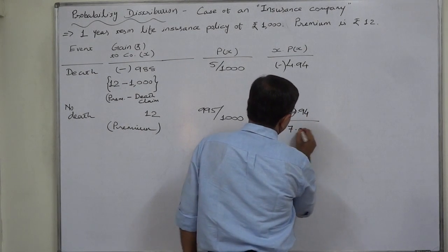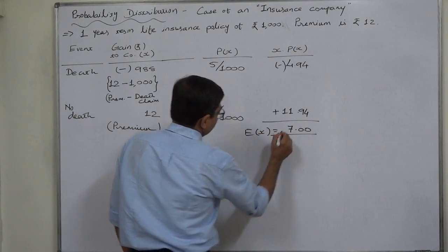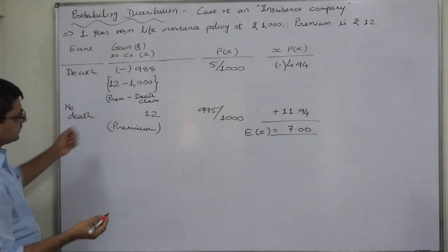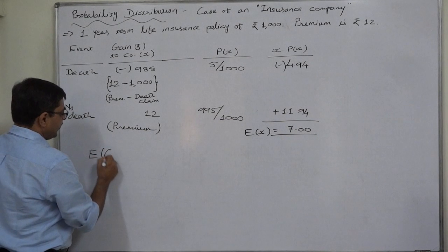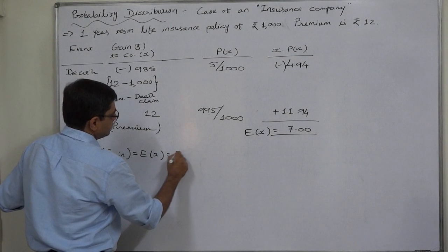Ultimately, the net is rupees 7. This is nothing but expected value of x and what is x? It is gain. Expected gain of the insurance company equals to rupees 7.